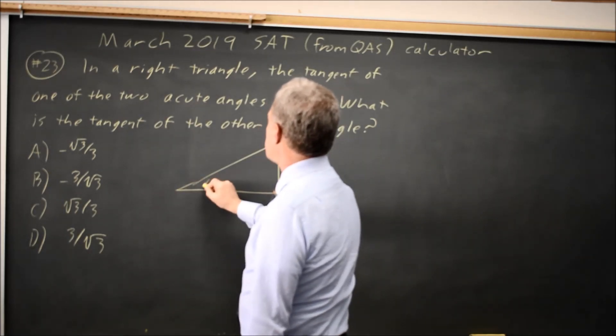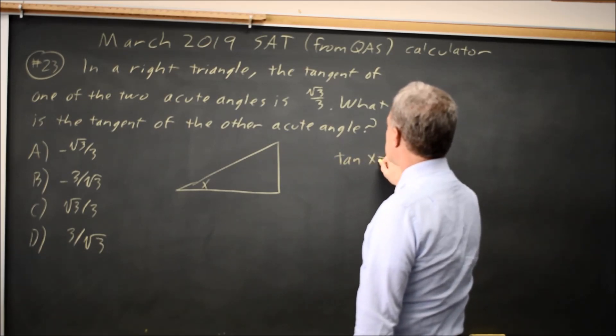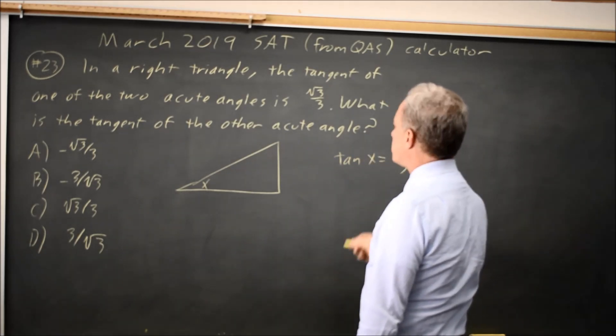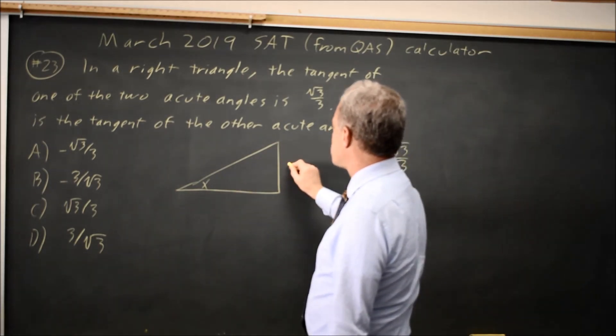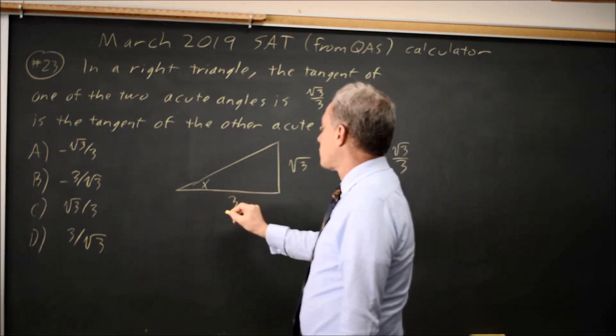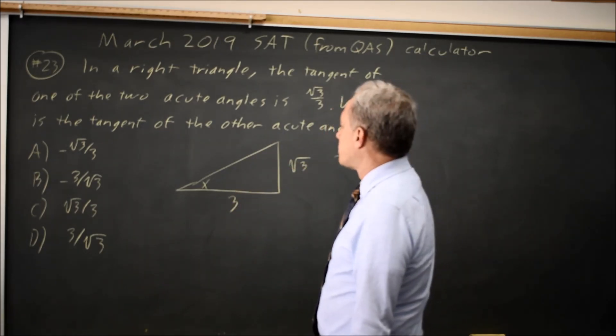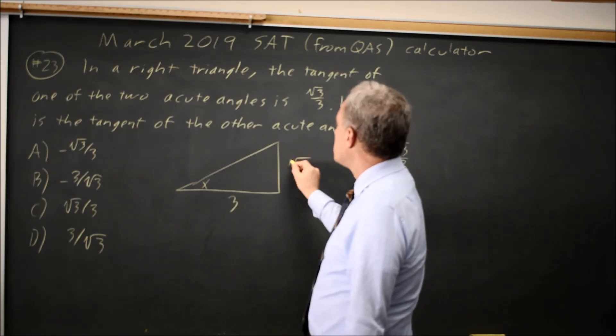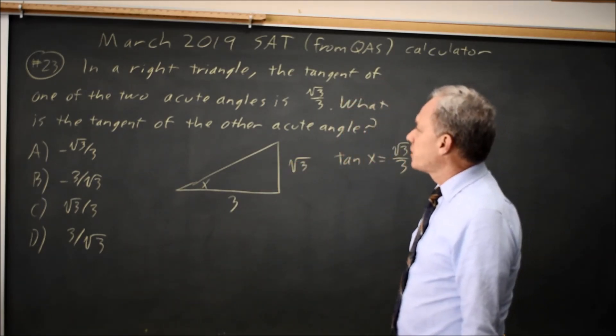So I'll draw a triangle. I'll label this angle x. We're told the tangent of x is square root of 3 over 3. The tangent is the opposite side over the adjacent side, and that's in the ratio of square root of 3 over 3. So if these were the lengths, then this angle would have the correct tangent. There are other values that work, but any values you make up that work will give you the correct answer.